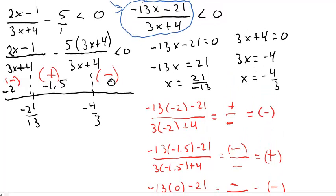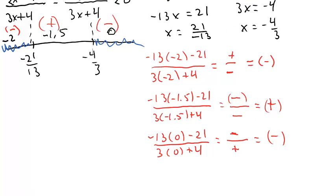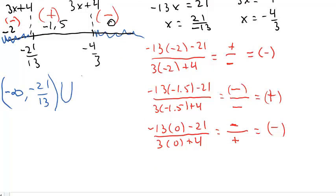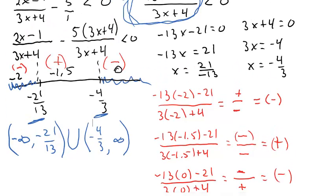We want to know when negative 13x minus 21 over 3x plus 4 is less than 0 — when is it negative. It's negative in the left region and the right region. So our solution is everything from negative infinity to negative 21 over 13 — parentheses because it's strictly less than — or everything from negative 4 thirds to positive infinity, also in parentheses. Neither endpoint is included. I hope this helped. Thank you.